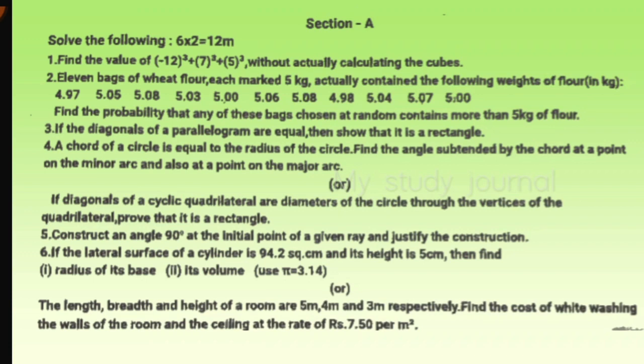Moving to Section A, the first question with no internal choice asks to find the value of the given polynomial without actually calculating the cubes, which we can solve using formula identities. The second one is a probability question.